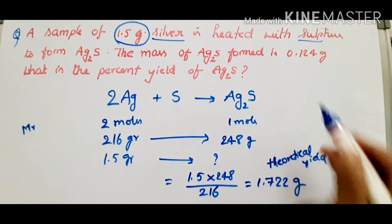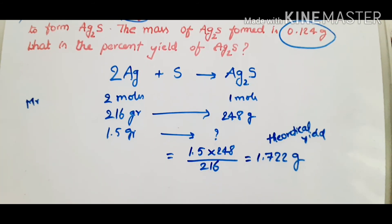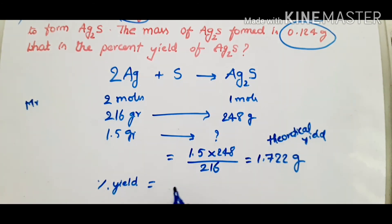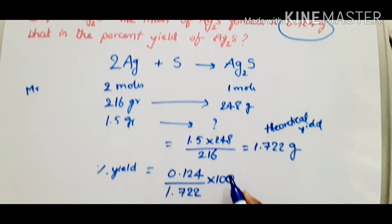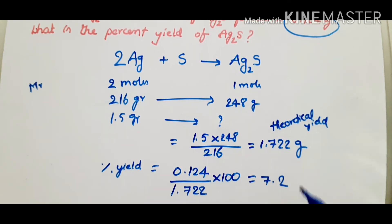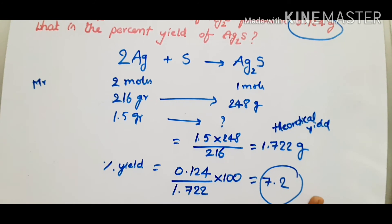Actual yield is 0.124 grams. Percent yield formula: percent yield equals actual yield 0.124 divided by theoretical yield 1.722, multiplied by 100. This gives 7.2%. So this is the percent yield of Ag₂S from the given data.